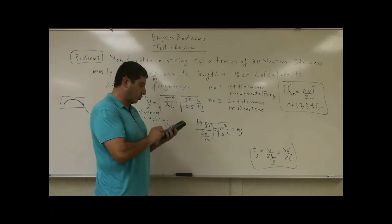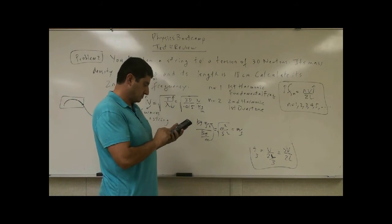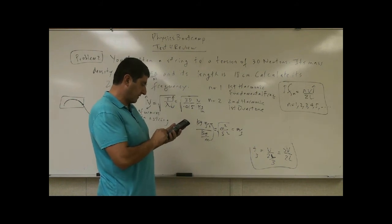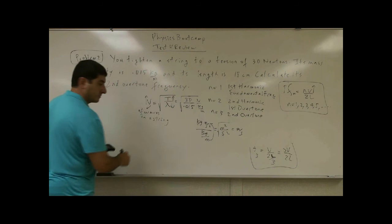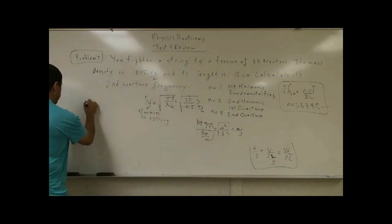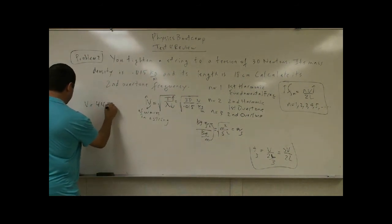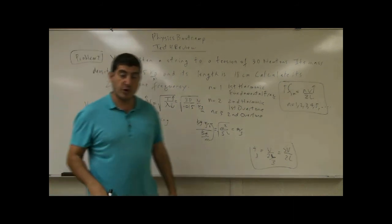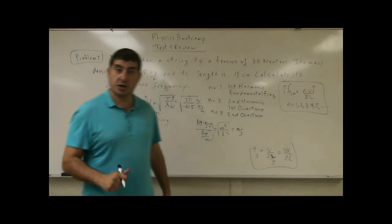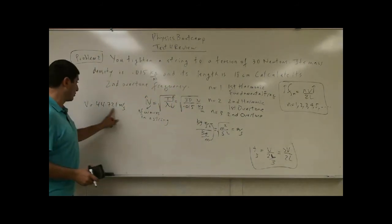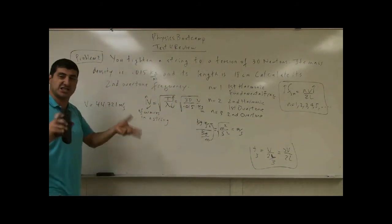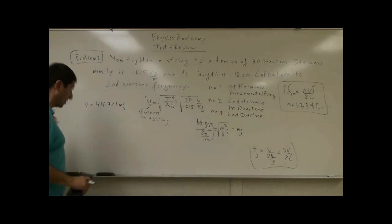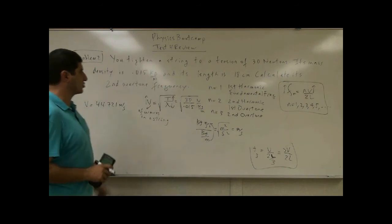So let's calculate that. 30 divided by 0.015. This one comes out to be 44.721 meters per second. So the velocity of the waves in the string are pretty fast. 44 meters per second, about 60, 65, 70 miles per hour the wave is going to travel in that string.